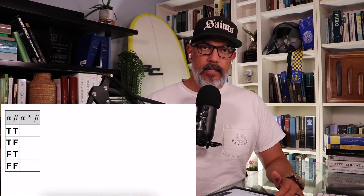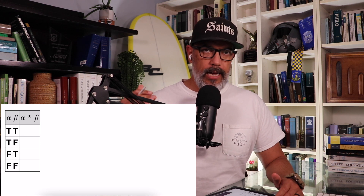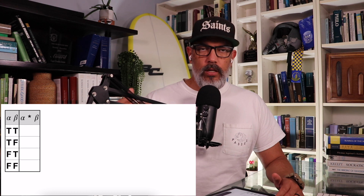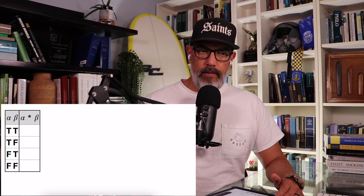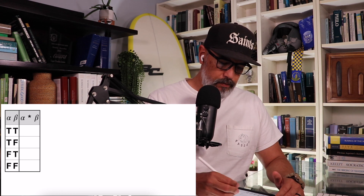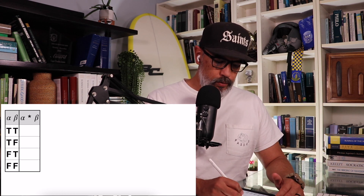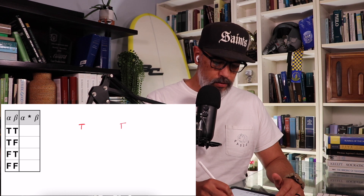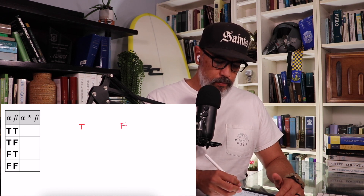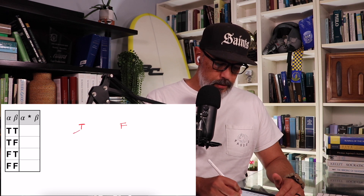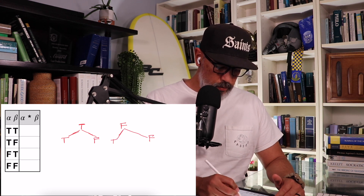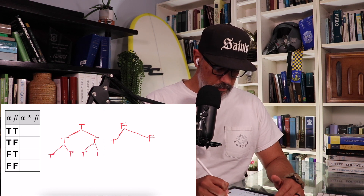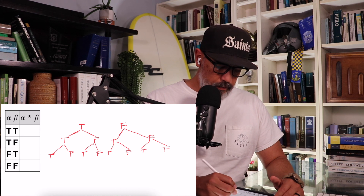Now, two-place connectives. With two-place connectives, we're going to have more combinations to worry about. We'll have when alpha is true and beta is true, when alpha is true and beta is false, when alpha is false and beta is true, and when alpha is false and beta is false. So we need to figure out all the different possible combinations. When alpha is true and beta is true, alpha-star-beta could be true or false. Then the same for when alpha is true and beta is false, when alpha is false and beta is true, and finally when alpha is false and beta is false.